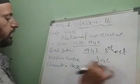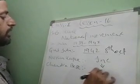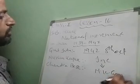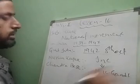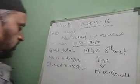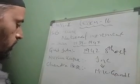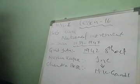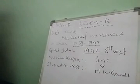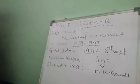The main person in that movement was M.K. Gandhi — Mohandas Karamchand Gandhi — who started this Quit India Movement. On 8th August 1942 they started the Quit India Movement.